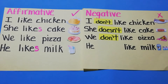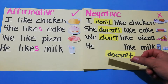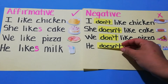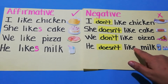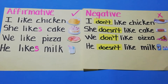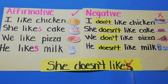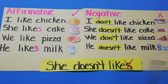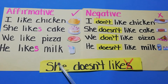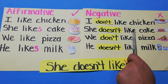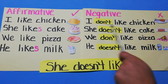He likes milk. You put doesn't before the verb like: He doesn't like milk. Remember, we cannot say she doesn't likes — this is not correct. We say she doesn't like — this is correct.